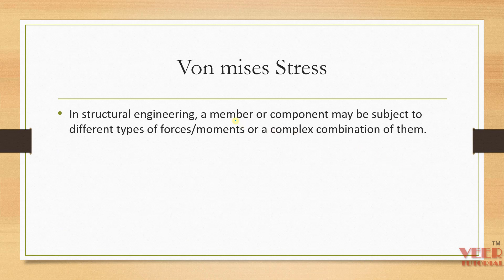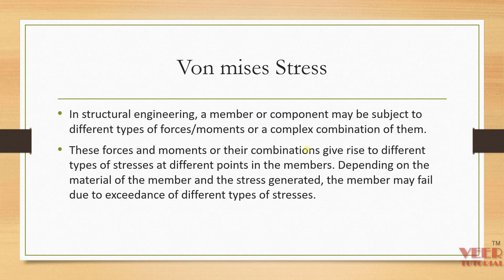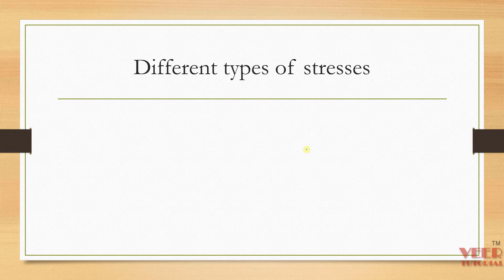In structural engineering, a component may be subjected to different types of forces or a complex combination of them. These forces and moments, or their combination, give rise to different types of stress at different points in the members. Depending on the material and the stresses generated, the member may fail due to the effects of different types of stresses. Whenever different types of forces act on any body, multiple types of stresses are generated.